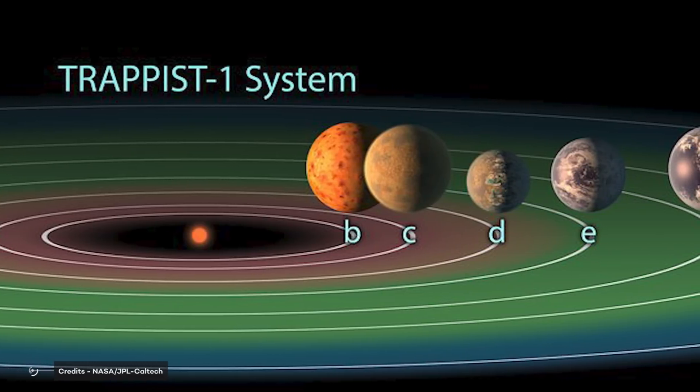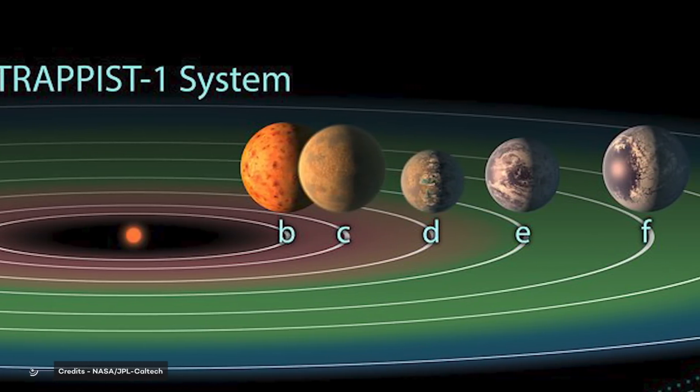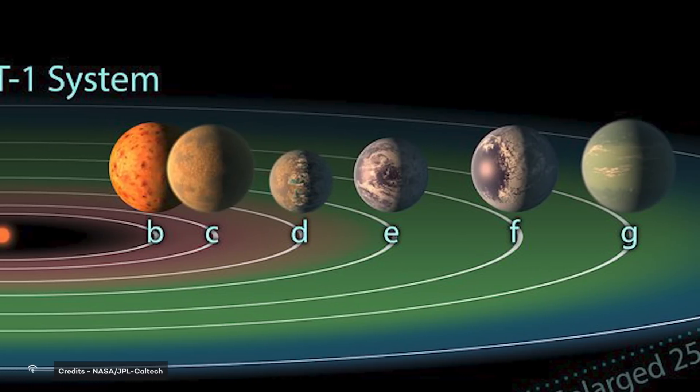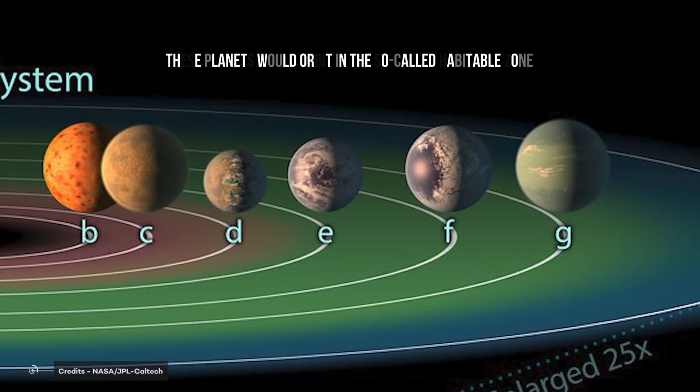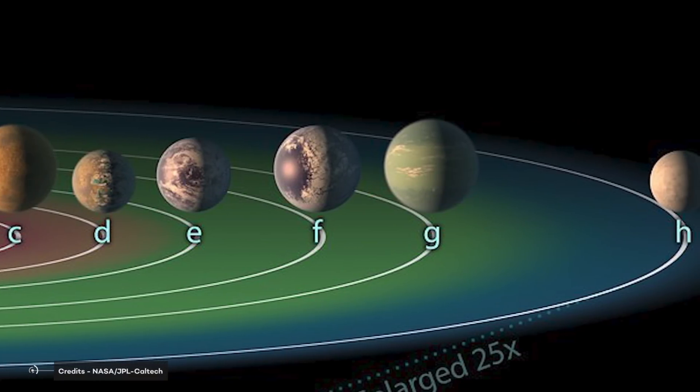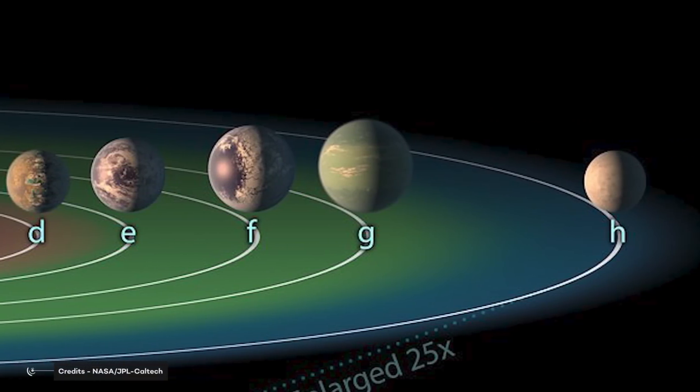Until now, it seems that, because TRAPPIST-1 is so cool, liquid water can condense on planets D, E, F, and G. According to some studies, these planets would orbit in the so-called habitable zone, and they could be home to vast oceans on their surfaces.